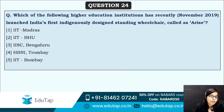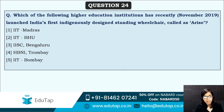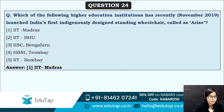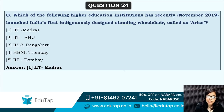Next: which of the following higher education institutions has recently launched India's first indigenously designed standing wheelchair? The name of this standing wheelchair is Arise — that can also be asked in the exam. The correct answer is option one — IIT Madras has launched this standing wheelchair named Arise.